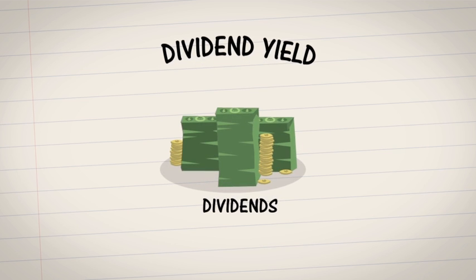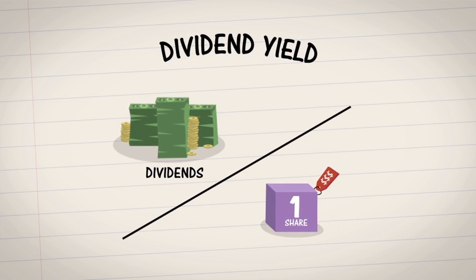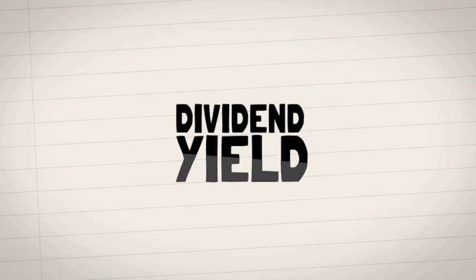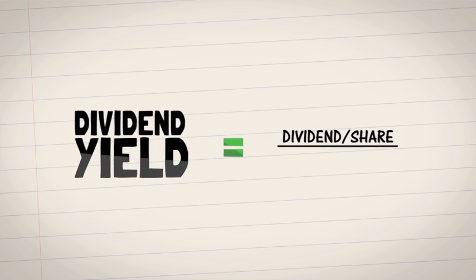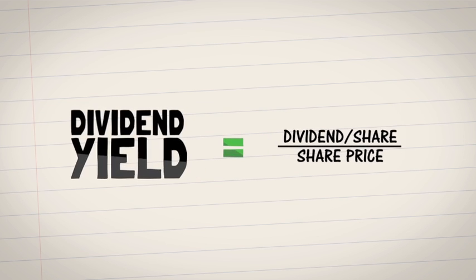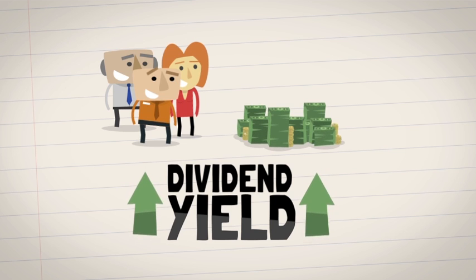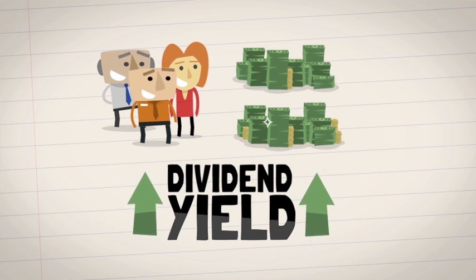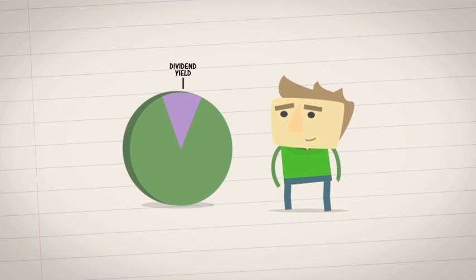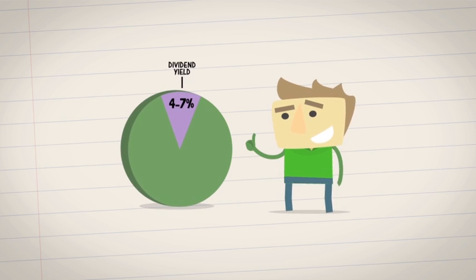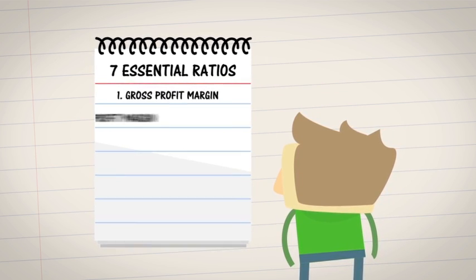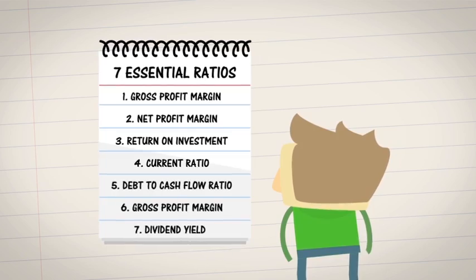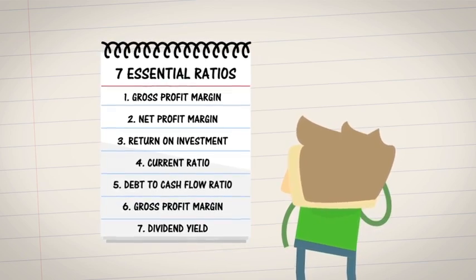Finally, the seventh essential ratio is the dividend yield. This measures how much in dividends the company pays out compared to their stock price. To calculate the dividend yield, take the dividend per share and divide it by share price. The higher the yield, the more dividends shareholders receive. Look for companies with consistent yields between 4% and 7%.